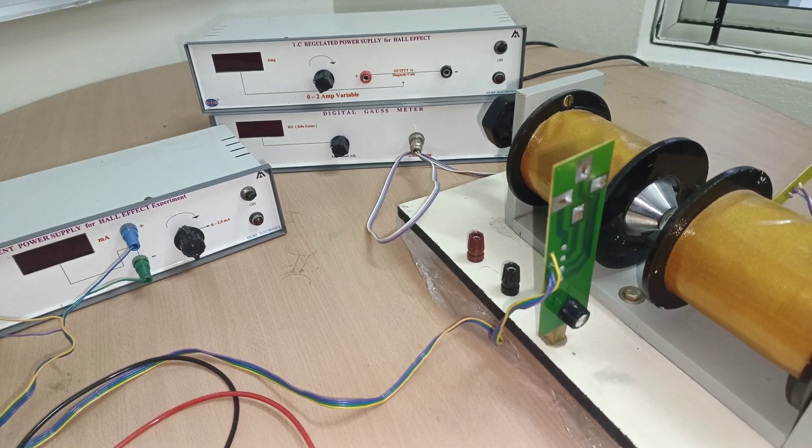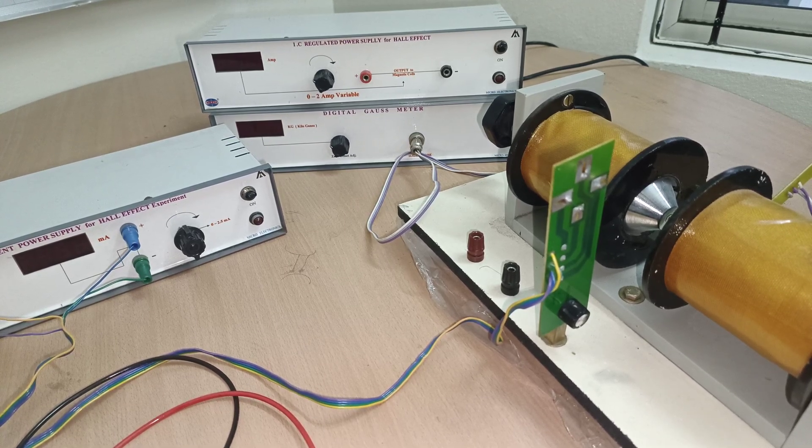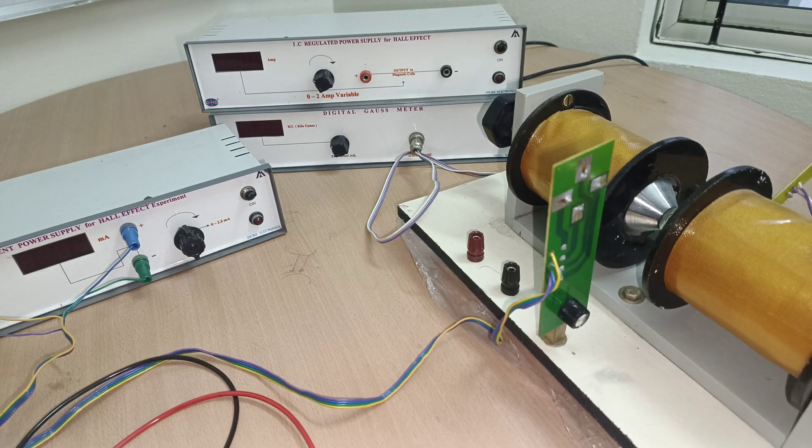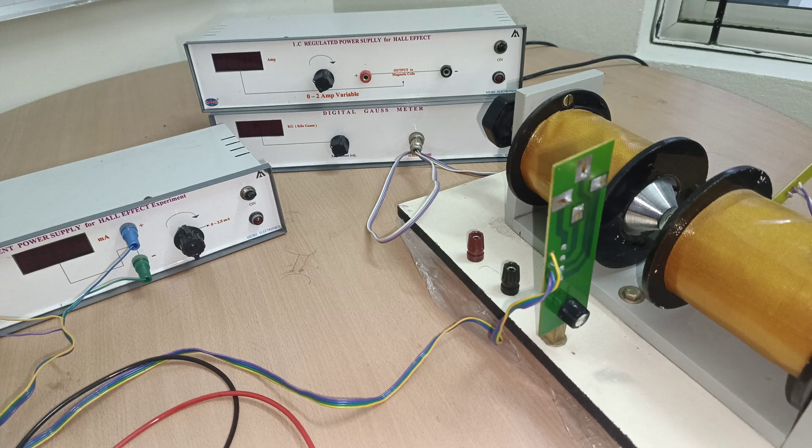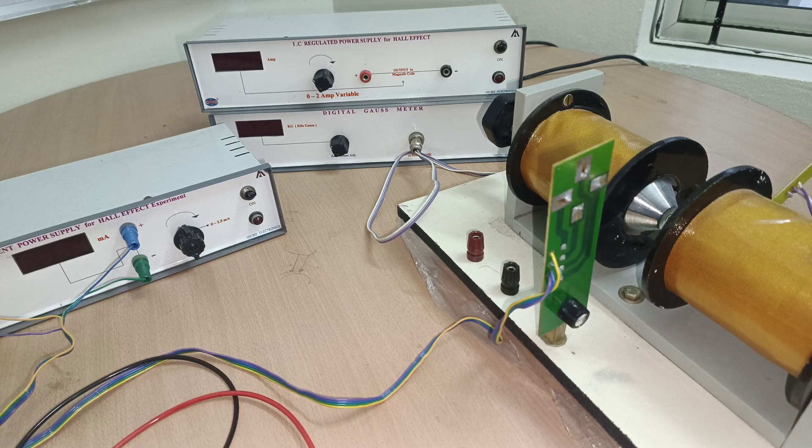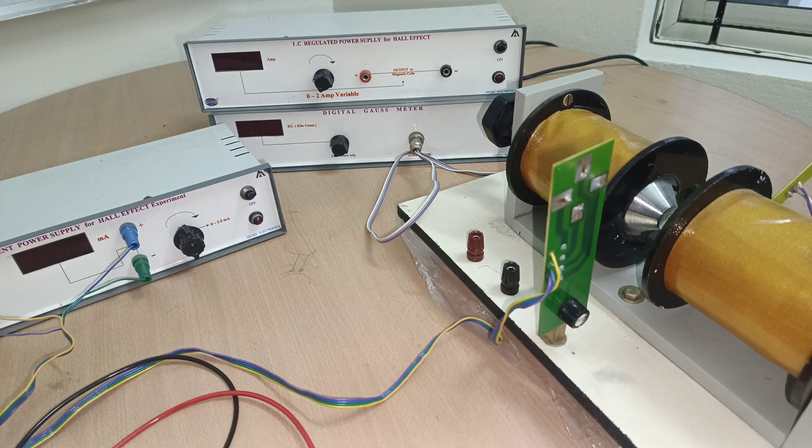Hello students. Now I am going to explain about Hall effect experiment. The main aim of the experiment is to determine Hall coefficient and to identify the type of the semiconductor, whether it is p-type or n-type.